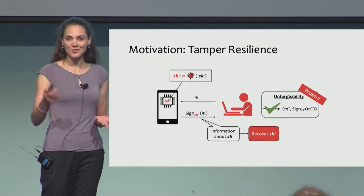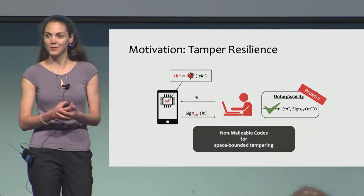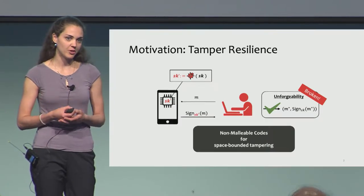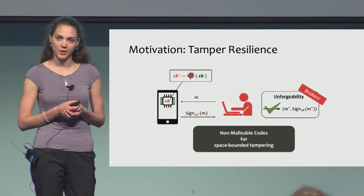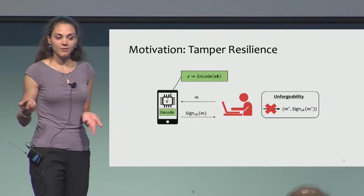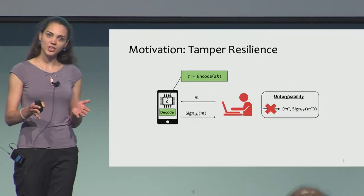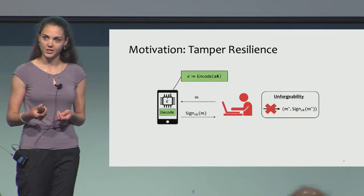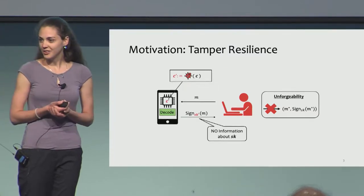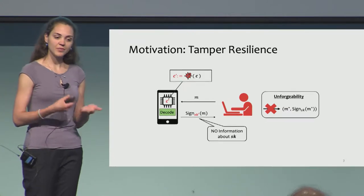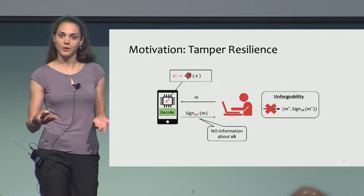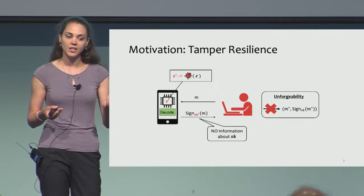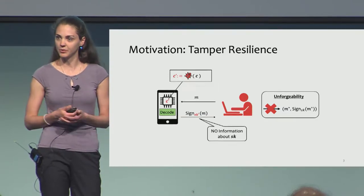So what can we do about it? We are in the session of non-malleable codes, so one way to protect against memory tampering is using a non-malleable code for space-bounded tampering. Roughly what would happen here: instead of storing the secret key on the memory of the device, we would store an encoding of this secret key. The non-malleability property would guarantee that even if someone tampers with the memory, no information is leaked about the original secret.